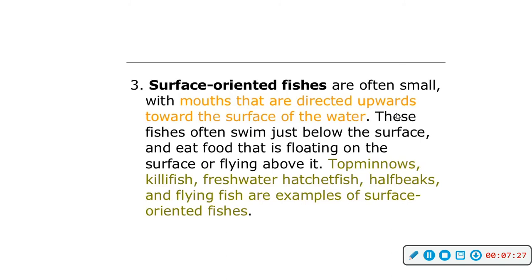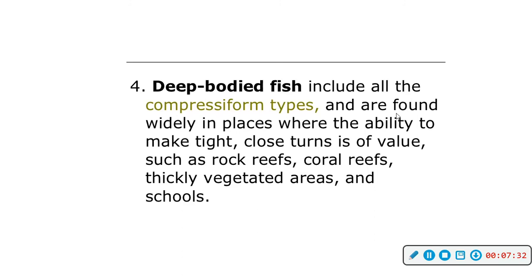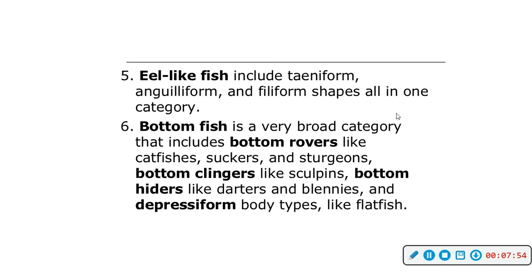Deep-bodied fish include compressiforms. They are found in places that require the ability to make tight close turns, and they live in rocky reefs, coral reefs, and thickly vegetated areas. Then you have your eel-like fish and your bottom fish.